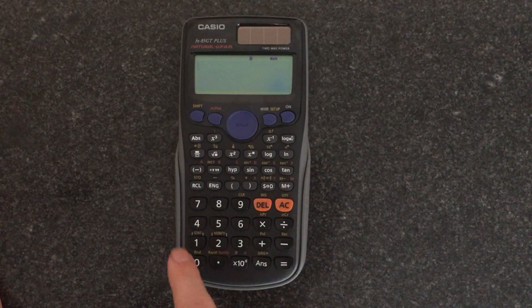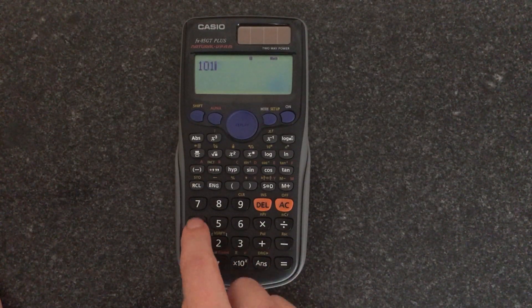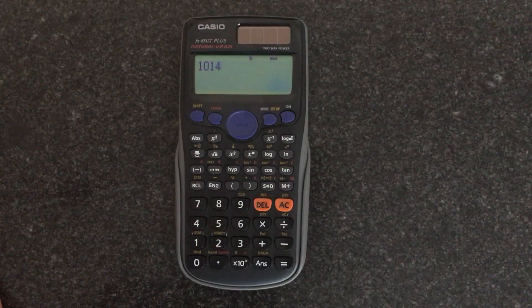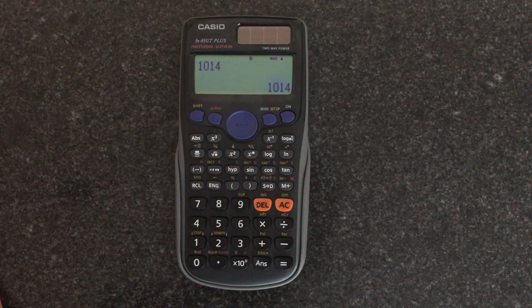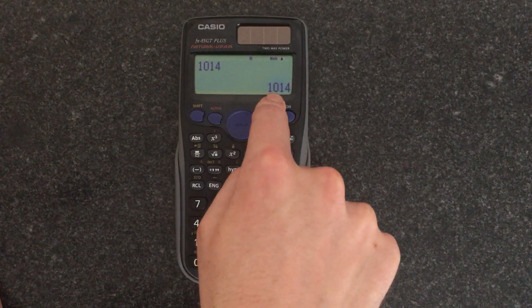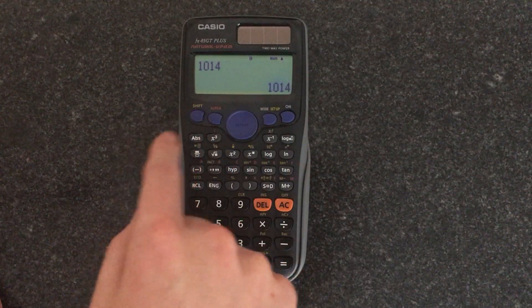Say we want to find the prime factorization of a nice interesting number like 1014. You input the number, you press equals, because all the calculations are done on the answer memory. So that's now saved into the answer memory.